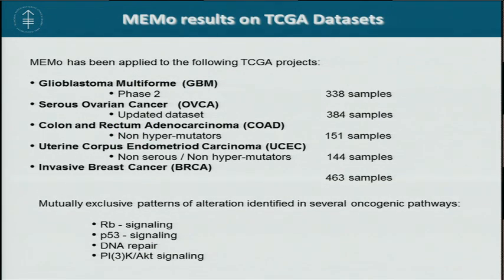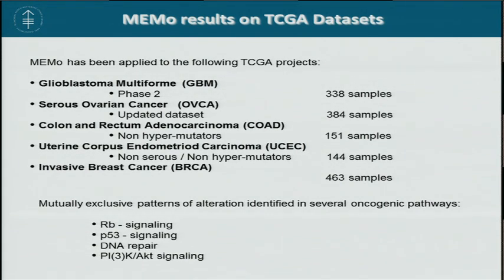MIMO has been successfully applied to several TCGA cancer projects. I'm focusing today on five of them, including updated datasets for serous ovarian cancer and glioblastoma multiforme, as well as more recent projects like colorectal adenocarcinoma focusing on the non-hypermutator subtype, uterine corpus endometrioid carcinoma focusing on non-hypermutator and non-serous subtypes, and invasive breast cancer, which has the largest dataset with complete genomic profiling.